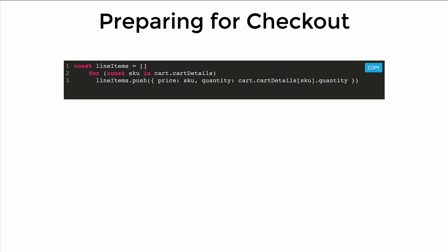This is very simplified, but preparing for checkout: at the end of the day, you have all this data but you can't pass it directly to redirectCheckout. You still need that line items structure. So we have a little for loop that formats the objects to be exactly the way they need to be for line items.